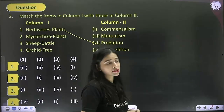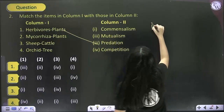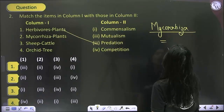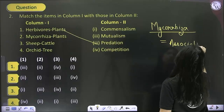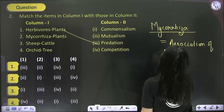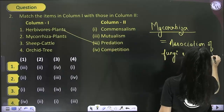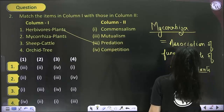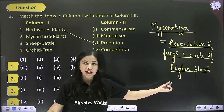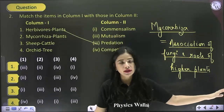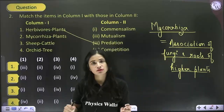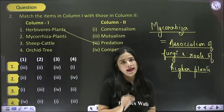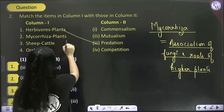Mycorrhizal association means the association between fungi and the roots of higher plants. Fungi gets shelter and prepared food, whereas the plant gets absorbed nutrients. They both show a mutualistic, symbiotic association — both require the presence of each other. If one gets extinct, the other will automatically get extinct too. So match mycorrhizal with mutualism.